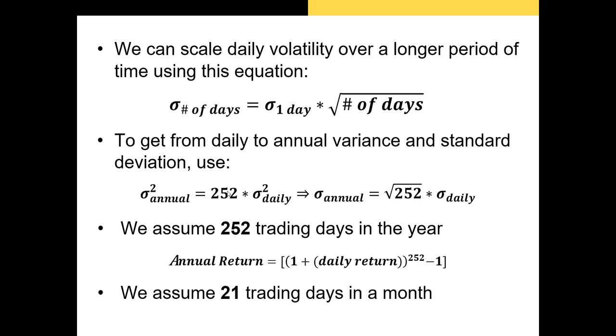This part right here, the annual volatility, sigma squared, is equal to 252 times the daily variance. So this thing right here just says that annual variance, sigma squared, is equal to 252 times daily variance.